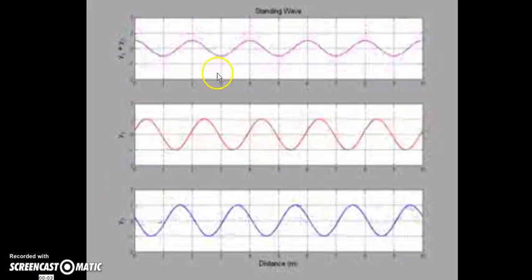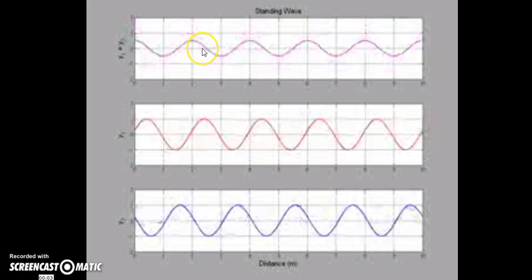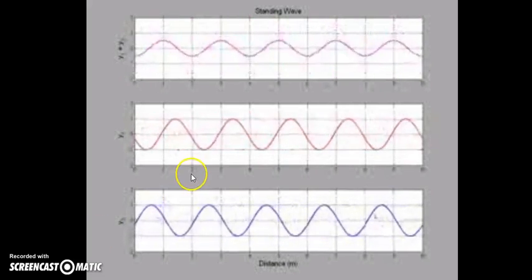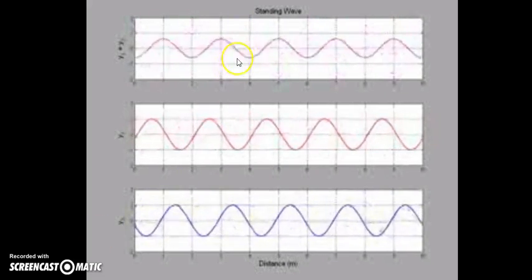There is one more interesting point: these are called antinodes — the points which displace the maximum. A standing wave has different points which vibrate with different amplitudes. Certain points do not move at all — those are called nodes. Energy is not transferred through them, so energy is trapped between two nodes. You can have a final look at how the waves are forming — these are two waves moving in opposite directions, and the standing wave is formed.